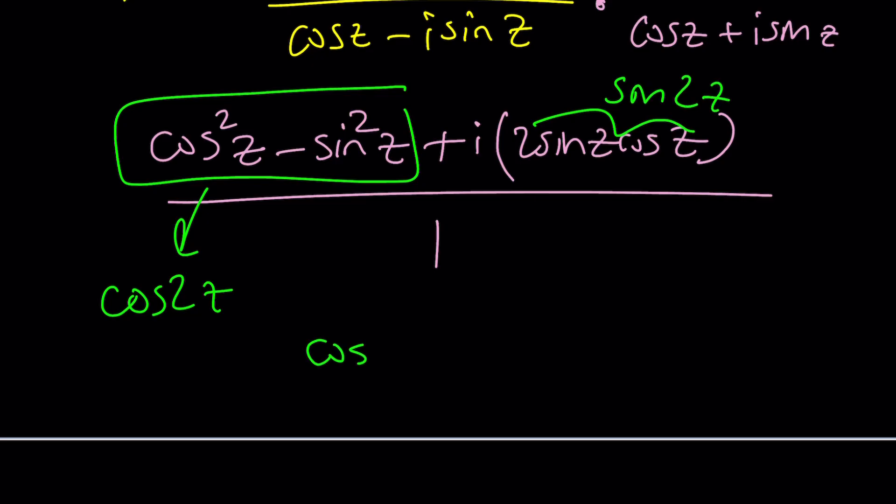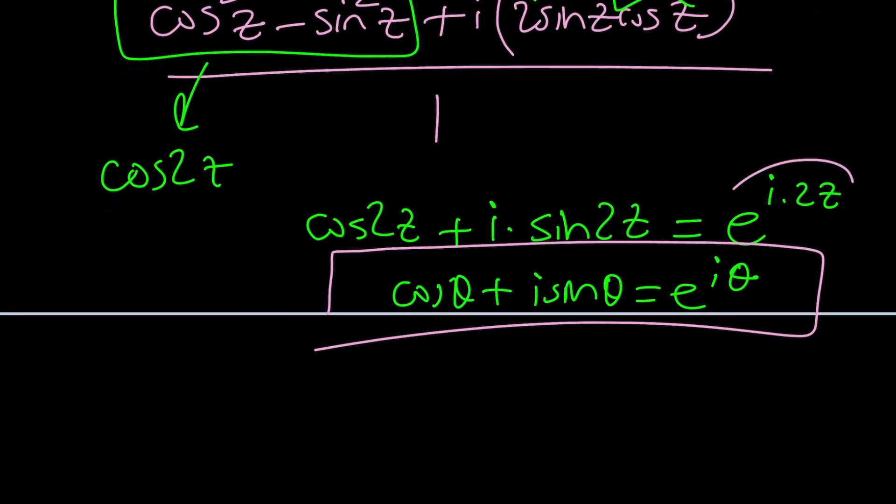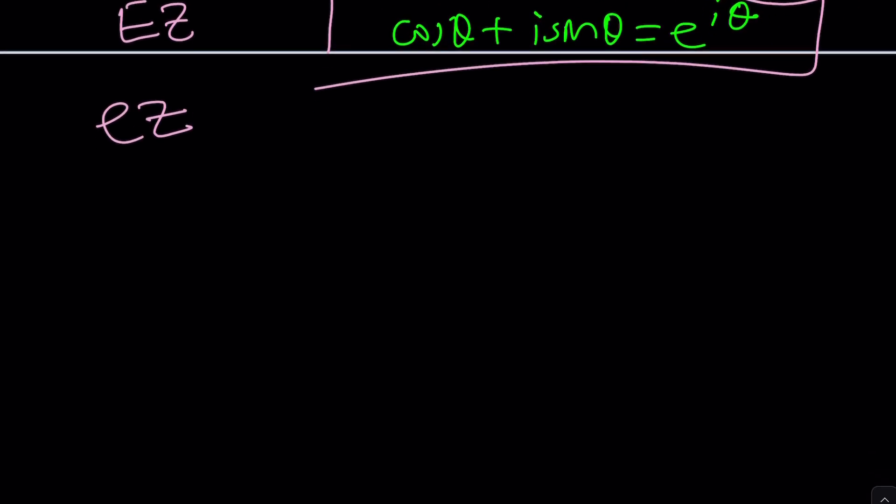But guess what? Trigonometry kicks in. This is the double angle for cosine, and this is the double angle for sine. So you get cosine of 2z plus i sine of 2z. And this is exactly e^(i times 2z), because remember, Euler's formula said cosine theta plus i sine theta is e^(i theta). This is the most beautiful equation. And from here, you're going to be able to find the solution, because this is equal to e. This brings us to the end of this video.